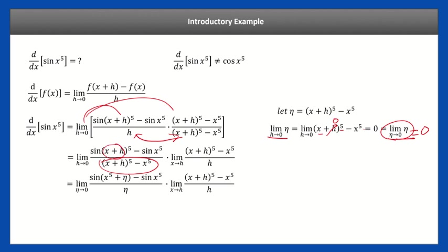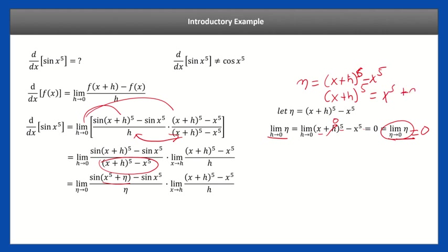We're going to take advantage of the fact that this is zero in order to substitute it in. We're going to replace h approaches zero with eta approaches zero. So that gets replaced with eta. Now this part — x plus h to the fifth — since eta equals x plus h to the fifth minus x to the fifth, I can solve for x plus h to the fifth, which equals x to the fifth plus eta. That's exactly what I substituted in here.